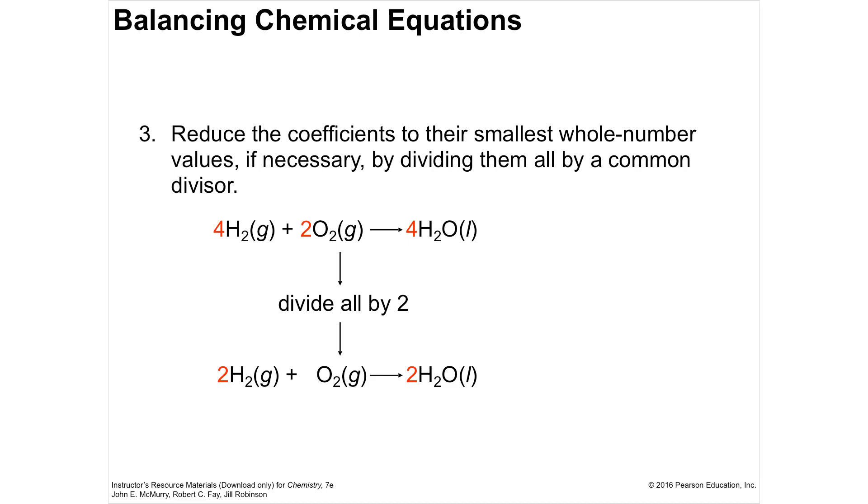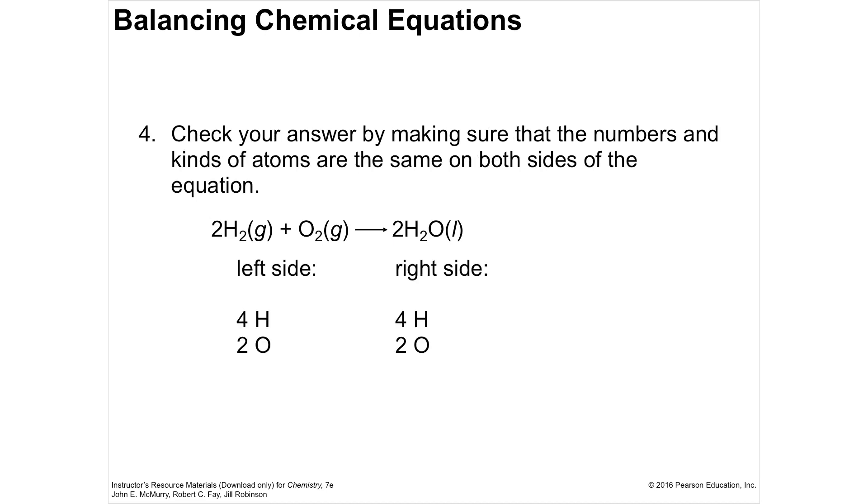And that would be the correct one. The last one, you check your answer by making sure both of the numbers and kinds are both on the same. So you make sure you have the atoms, the same types of atoms, and the same number of each type of atom on the left and the right side. And that's a balanced equation.